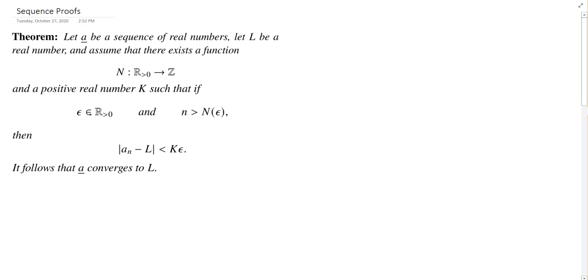The next bit just copies the definition of sequence convergence, so such that if you have some positive real number epsilon and you go out past the eventually number for epsilon, then the difference between the terms in the sequence and the proposed limit L is less than,